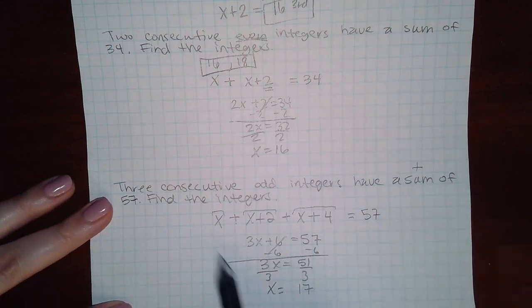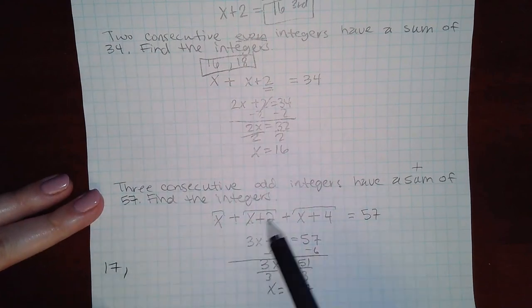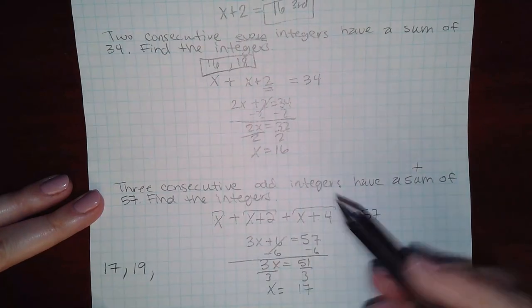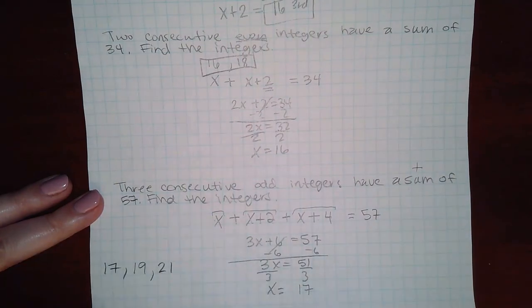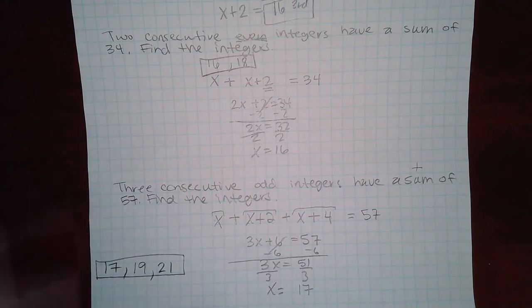And so that means that the first number is 17, 17 plus 2 which is 19 second number, and then 17 plus 4 is 21 and that's the next odd number. So there are your three integers.